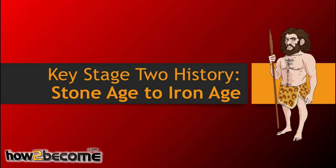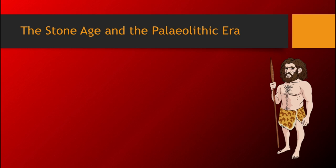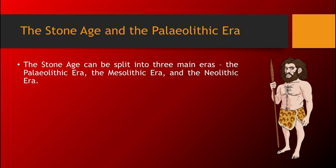Let's get started. The Stone Age can be split into three main eras: the Paleolithic Era, the Mesolithic Era, and the Neolithic Era. You can also call these the Early Stone Age, the Mid Stone Age, and the Late Stone Age.